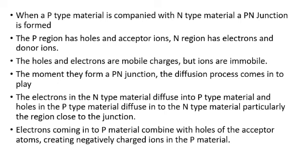When a P-type material is combined with N-type material, a PN junction is formed. The P region has holes and acceptor ions, while the N region has electrons and donor ions.